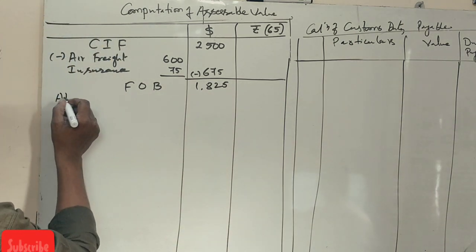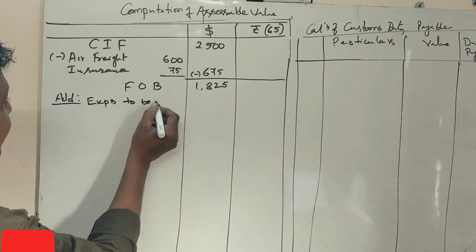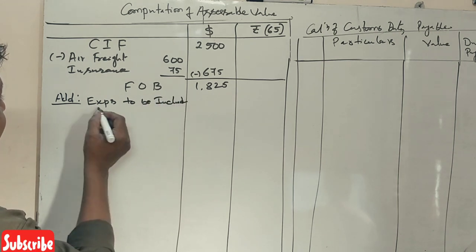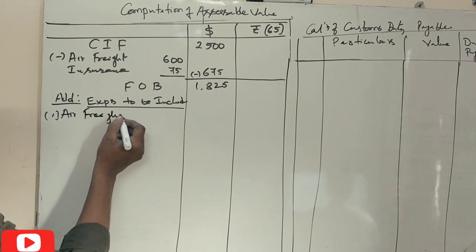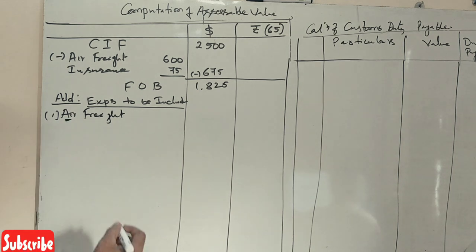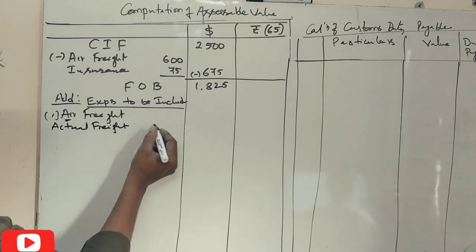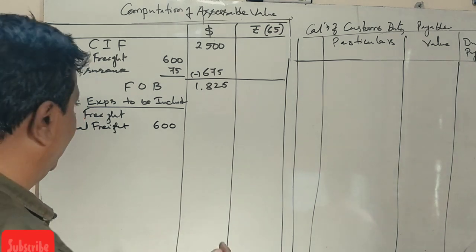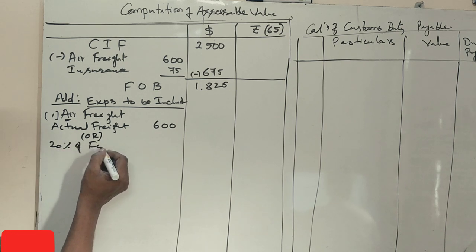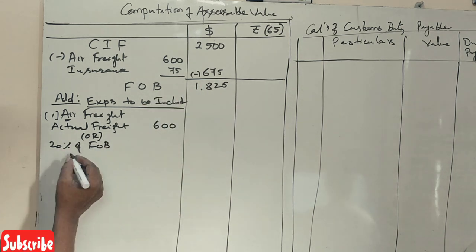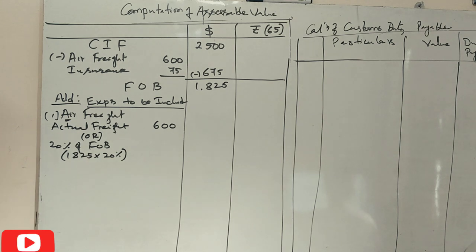Now, for air freight, there is a rule: the first thing to check is the actual air freight. The actual air freight is $600. We also calculate 20% of FOB. If the FOB is $1,825, then 20% of that is calculated.